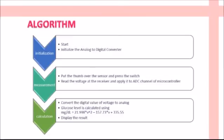The algorithm for the system can be divided into three parts: initialization, measurement, and calculation. In the initialization phase, we initialize the analog-to-digital converter of the system. During measurement, the user places their thumb over the sensor and presses the switch. The LED transmits signals and the reflected signal is received at the receiver. We then read the voltage at the receiver and apply it to the ADC channel of the microcontroller. The ADC converts the analog signal to digital form. Inside the microcontroller, the digital signal is converted back to analog and fed as input to the glucose equation.